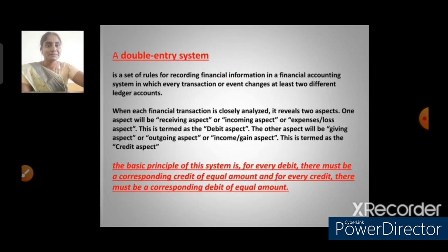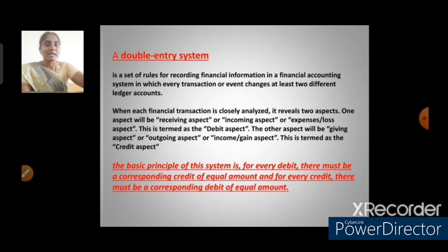The double entry system is a set of rules for recording financial information in which every transaction changes at least two different ledger accounts. When each financial transaction is analyzed, it reveals two aspects: one is the receiving, incoming, or expense aspect — termed the debit aspect; the other is the giving, outgoing, or income/gain aspect — termed the credit aspect. The basic principle is: for every debit there must be a corresponding credit of equal amount, and vice versa.